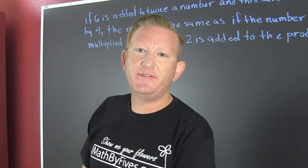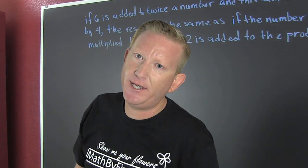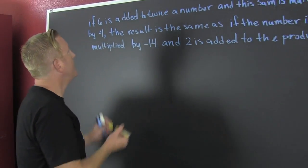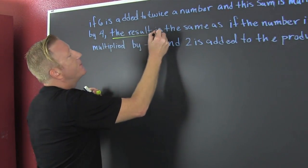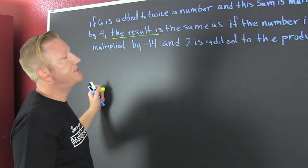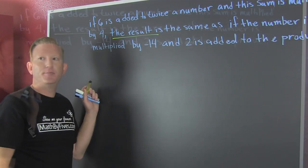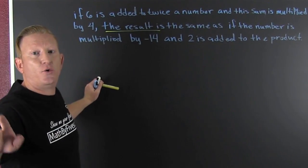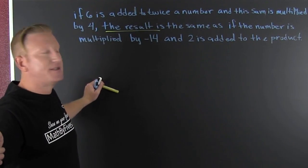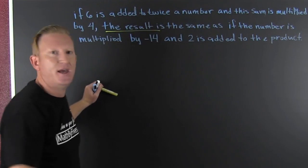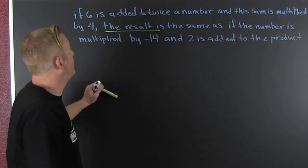The first thing we want to do is identify the equal sign because this is an equation. All right, it's right here. Boom. The result is the same as if the number is multiplied by minus 14 and two is added to the product. Now, when you identify the equal sign, you just cut your work in half because you only work with the first part.